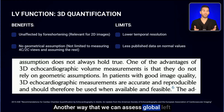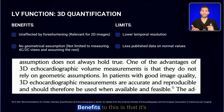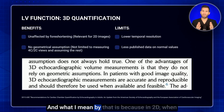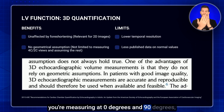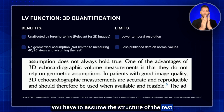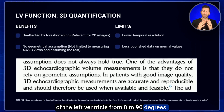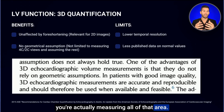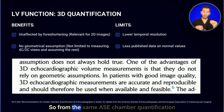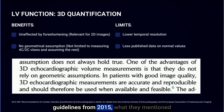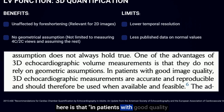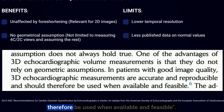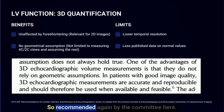Another way to assess global LV function is with 3D quantification. Benefits include that it's unaffected by foreshortening and has no geometric assumption. In 2D at 0 and 90 degrees, you must assume the structure of the remaining left ventricle between those planes, whereas in 3D you're actually measuring all of that area. The 2015 ASE chamber quantification guidelines state that in patients with good quality images, 3D echocardiographic measurements are accurate and reproducible and should be used when available and feasible.